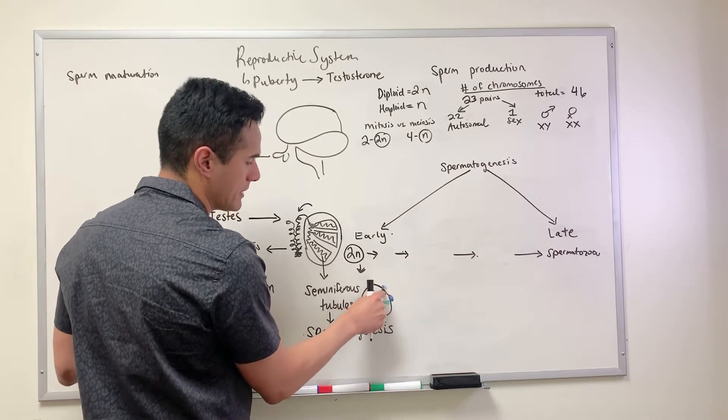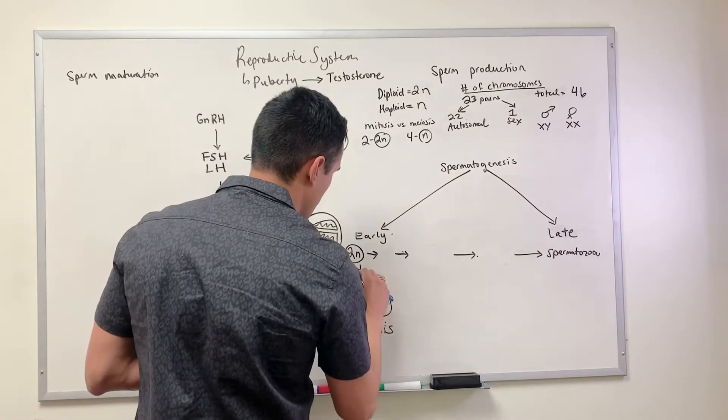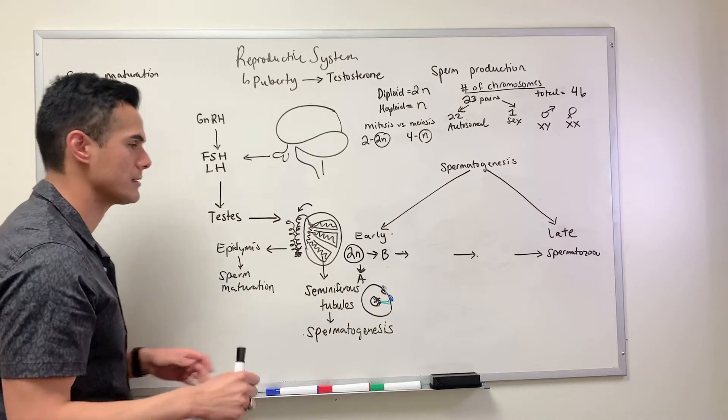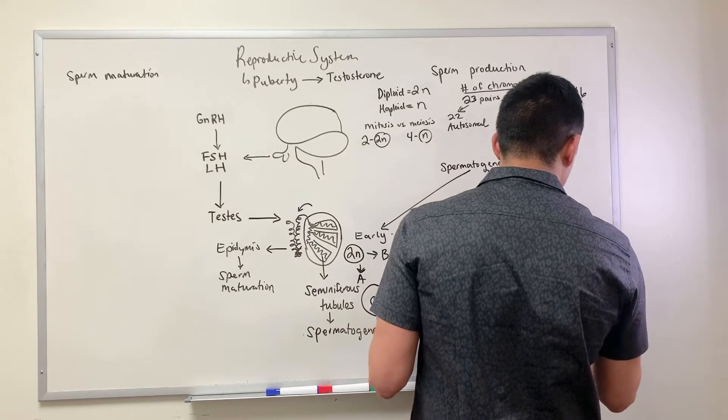This is where the stem cell is. The stem cell divides into two types of cells: it divides into type A and type B daughter cells.